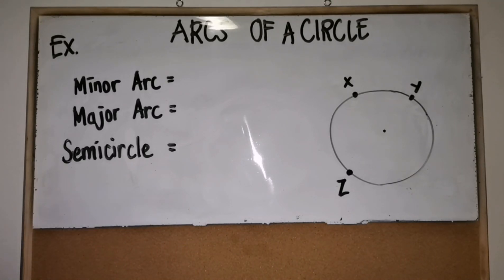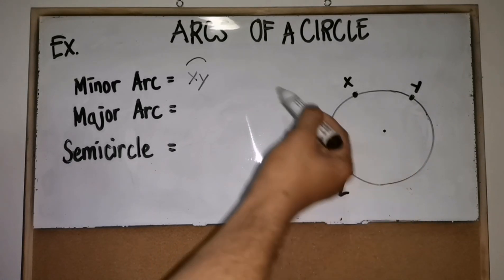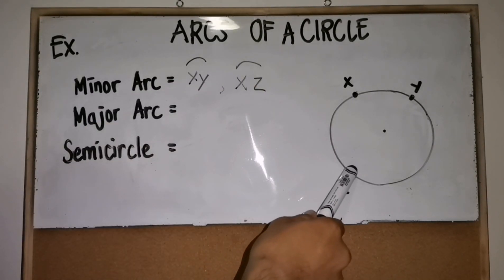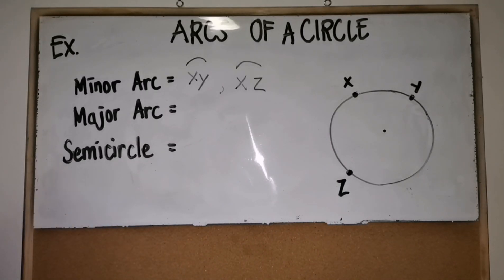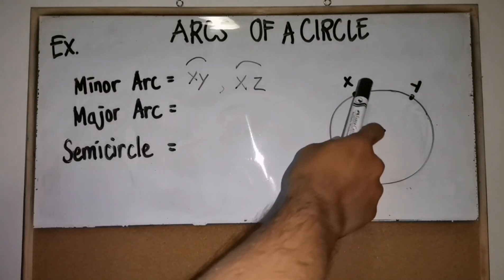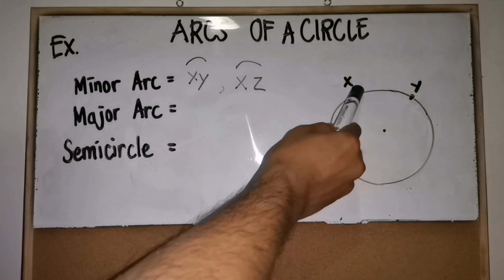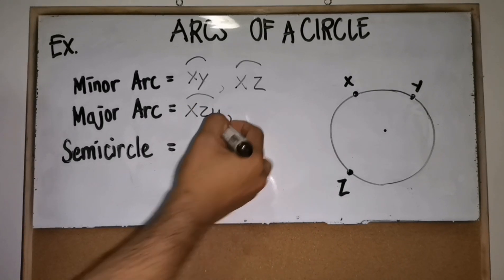For example, let's identify the minor arc, major arc, and semicircle in this figure. For the minor arc, we can have arc XY and arc XZ, because both measure less than 180 degrees. For the major arc, the arc opposite the minor arc is the major arc, so we can have arc XZY, which can also be named arc YZX.